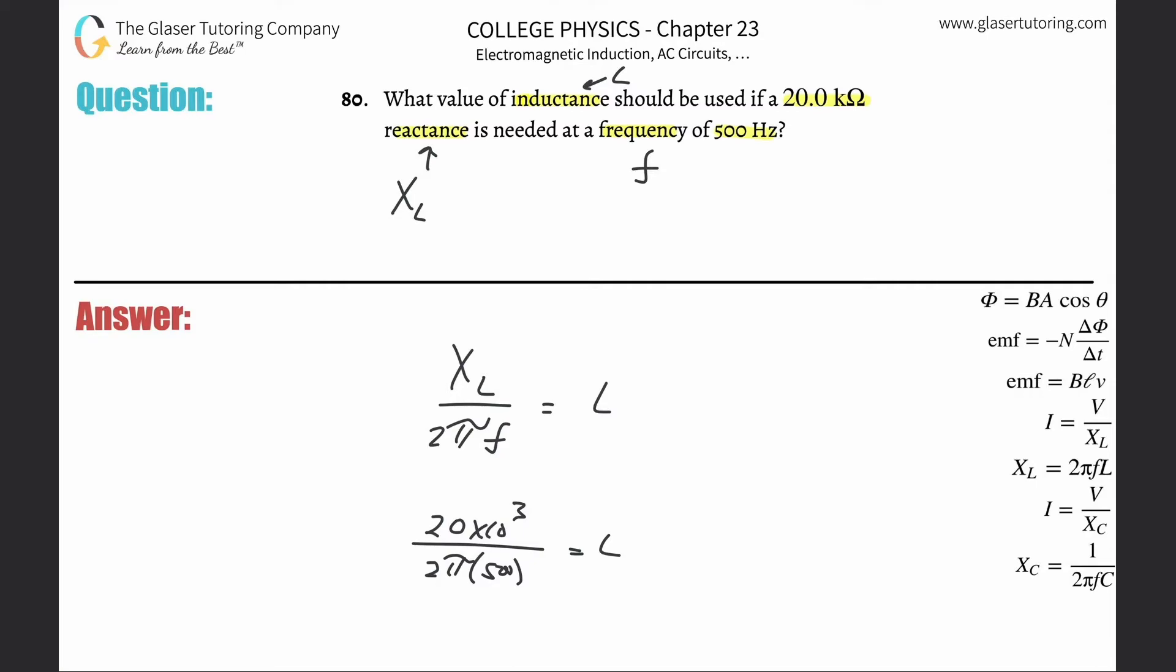So this is going to be 20 times 10 to the third divided by (2π times 500).